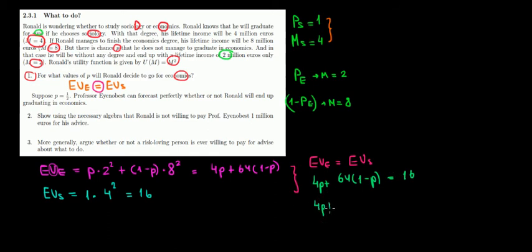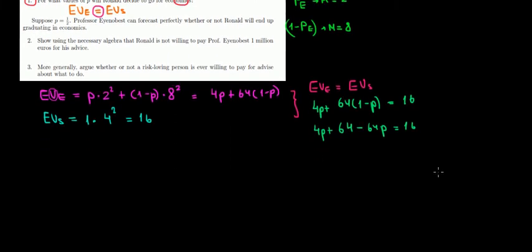If you open the brackets, we have 4p plus 64 minus 64p equals 16. Let's make it better. Let's take the numbers on one side and the probabilities on the other side. So we would have 64, and if we take 16 over there, we would have 48.